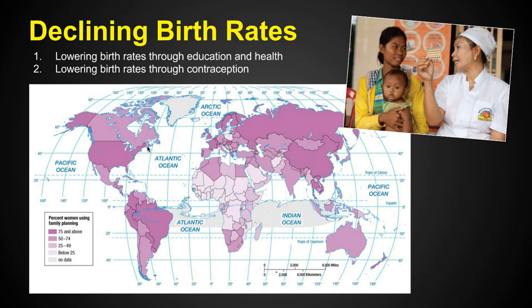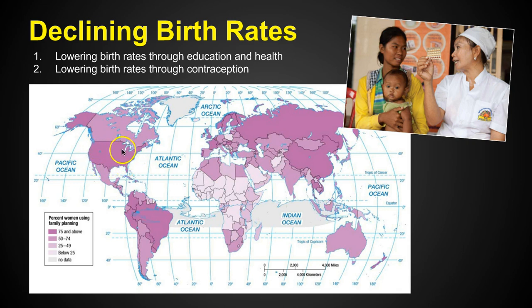Declining birth rates occur for two main reasons: education and access to contraception. In sub-Saharan Africa, there are fewer schools, women often aren't attending school, and birth control is less available — so birth rates remain high. In contrast, in the United States, women largely have access to education, jobs, and a wide range of birth control options, resulting in lower birth rates.